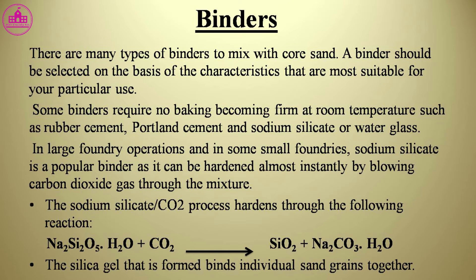There are many types of binders to mix with coarse sand. A binder should be selected on the basis of the characteristics most suitable for a particular use. Some binders require no baking, becoming firm at room temperature, such as rubber cement, Portland cement, and sodium silicate or water glass. In large foundry operations, sodium silicate is a popular binder as it can be hardened almost instantly by blowing carbon dioxide gas through the mixture. The sodium silicate CO2 process hardens through the reaction: Na2SiO3 + H2O + CO2 → SiO2·H2O + Na2CO3. The silica gel formed binds individual sand grains together.